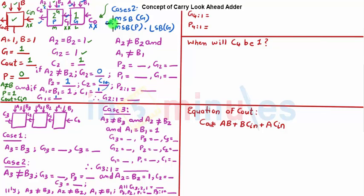So we just saw that G2 is to 1, or group generate for two blocks, is nothing but if G2 is high that the second block has a generate high or if second block has a propagate high and the first block has its generate high then G2 is to 1 is high. That clearly says that my C2 is equal to 1.